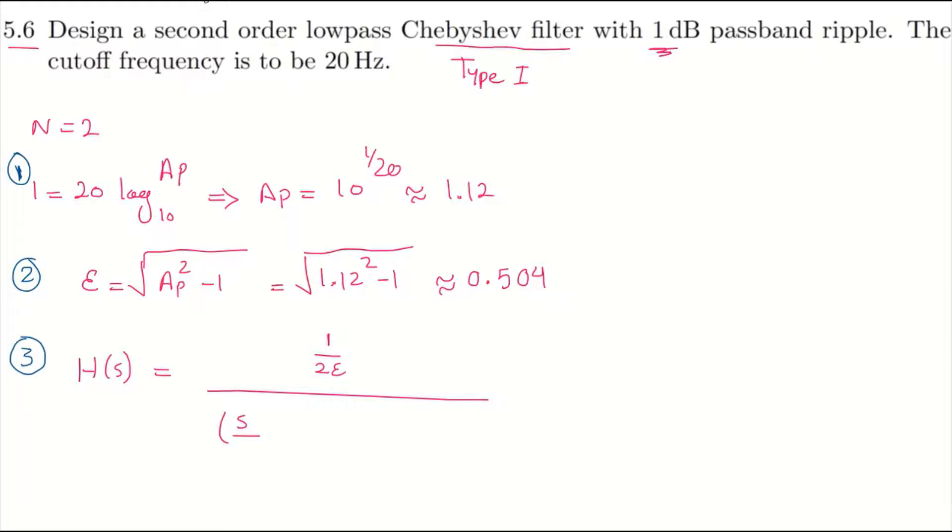Over s over omega_c squared plus square root of 1 plus 1 over epsilon squared minus 1 times s over omega_c, plus square root of 1 plus epsilon squared divided by 2 times epsilon.